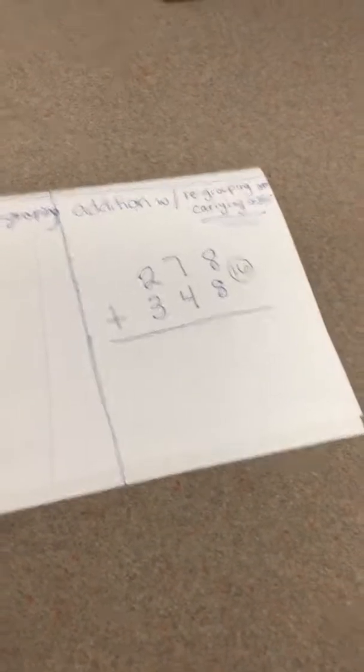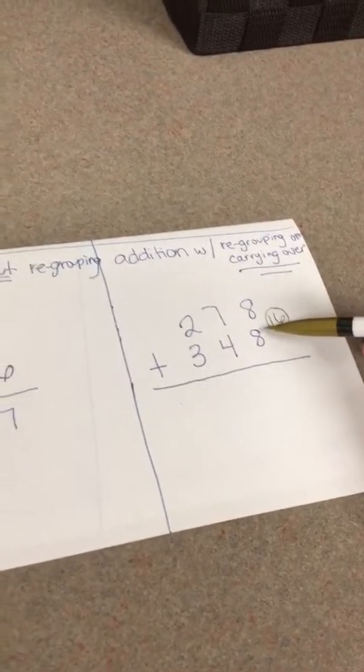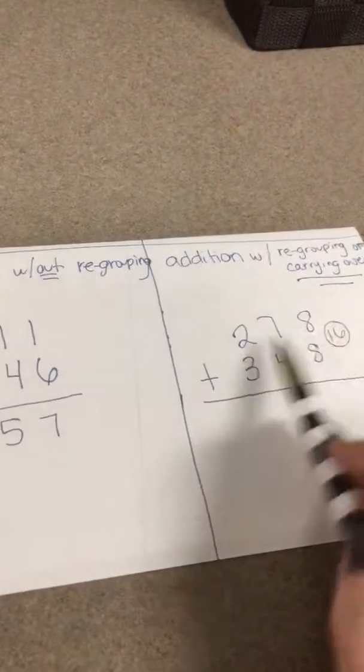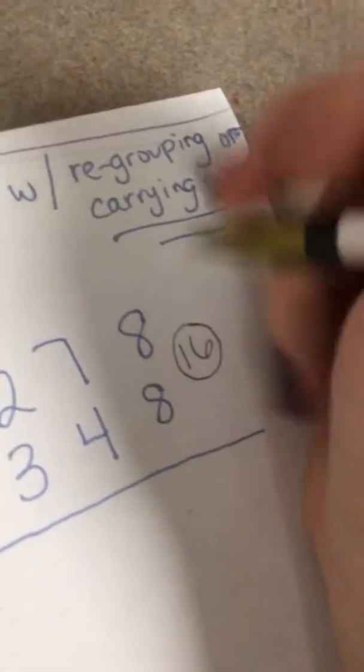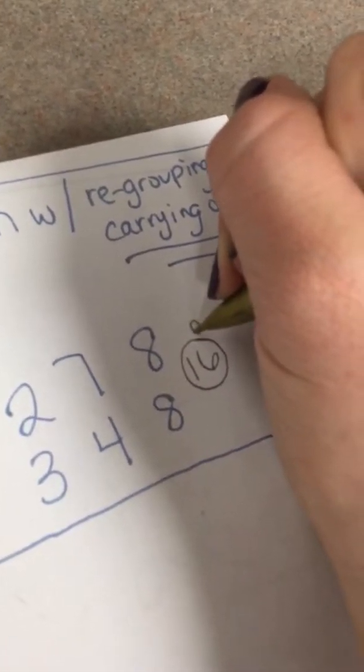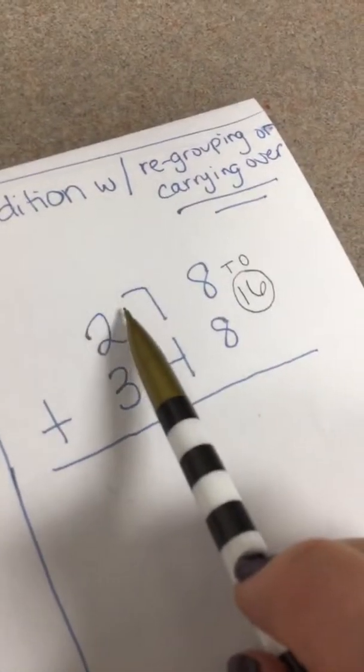So I teach them the strategy in the ones place to go ahead and write that answer, because in the beginning before they understood what carrying over was, I had to teach it like this. When you write that number, remember that this six is technically in the ones place and this one is represented in the tens place, because they were getting confused at what number do you leave here and what number do you carry over.